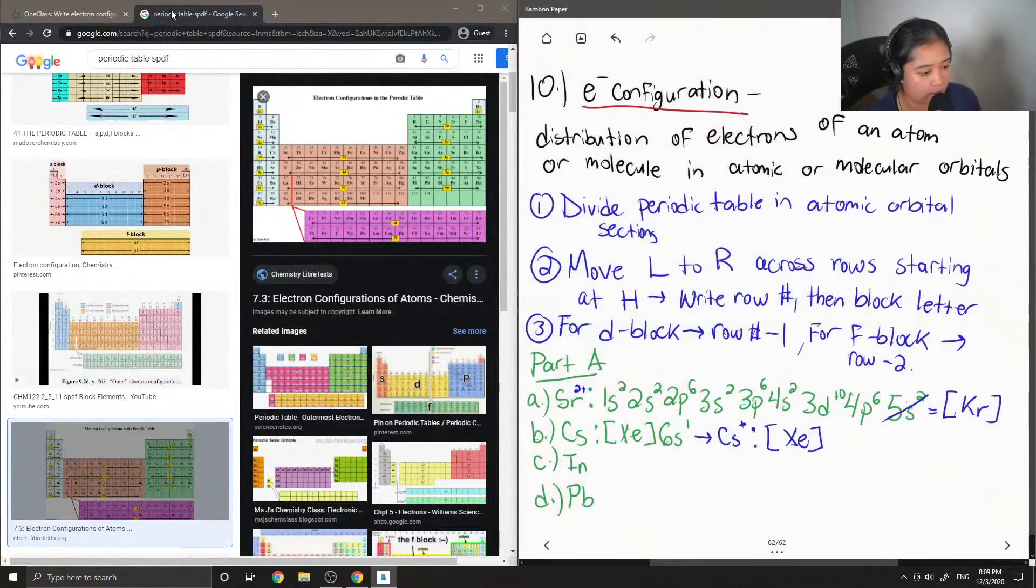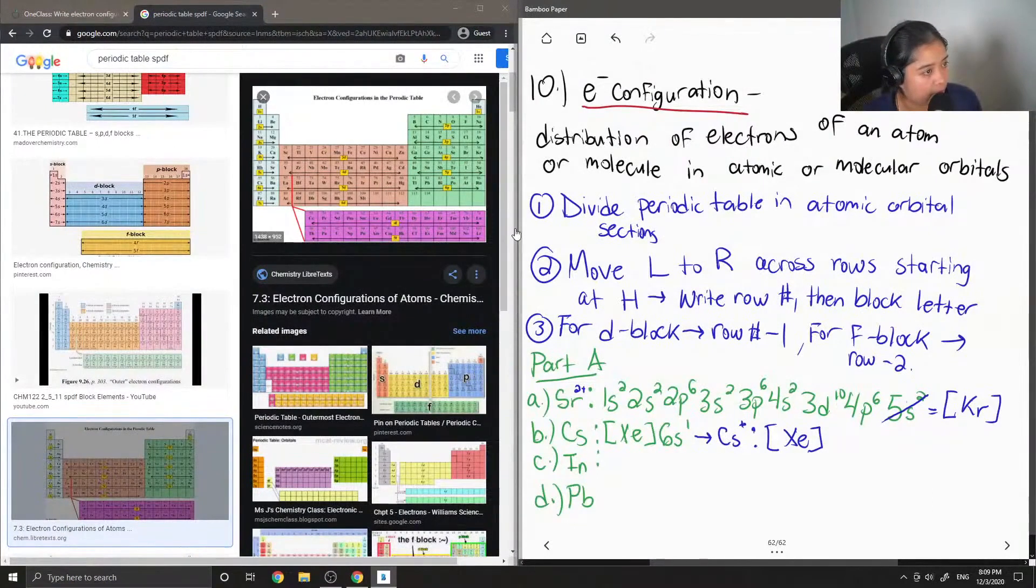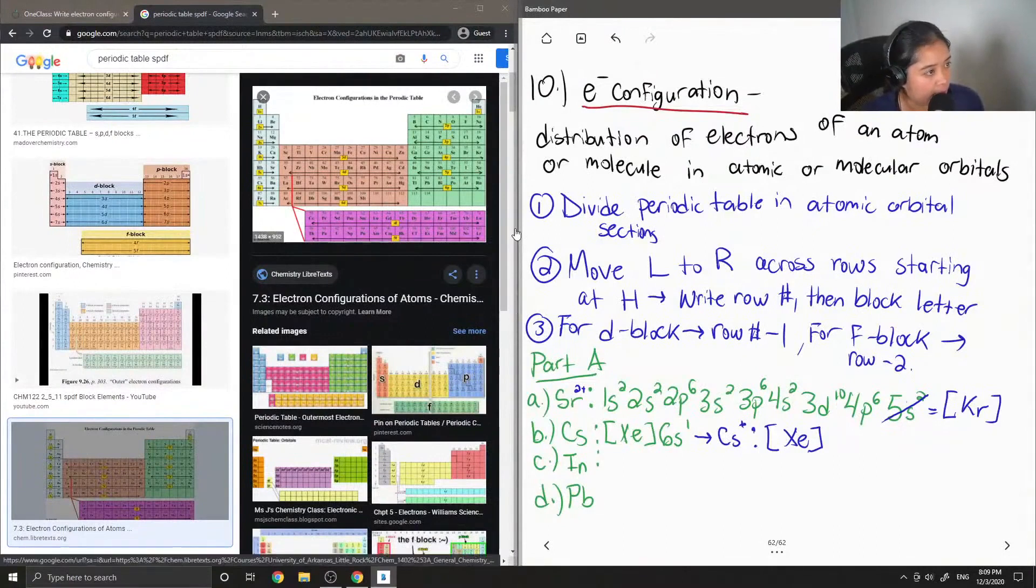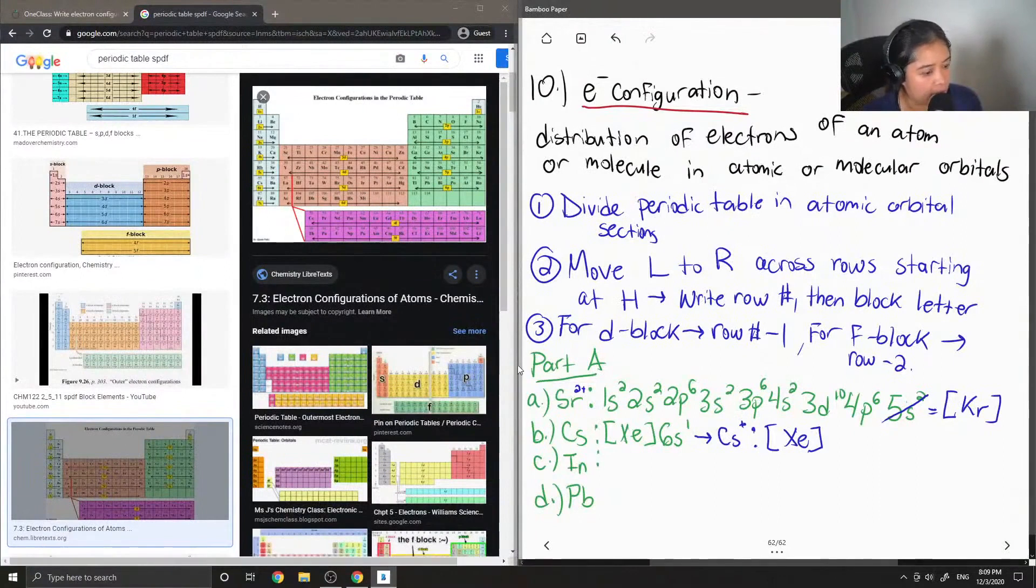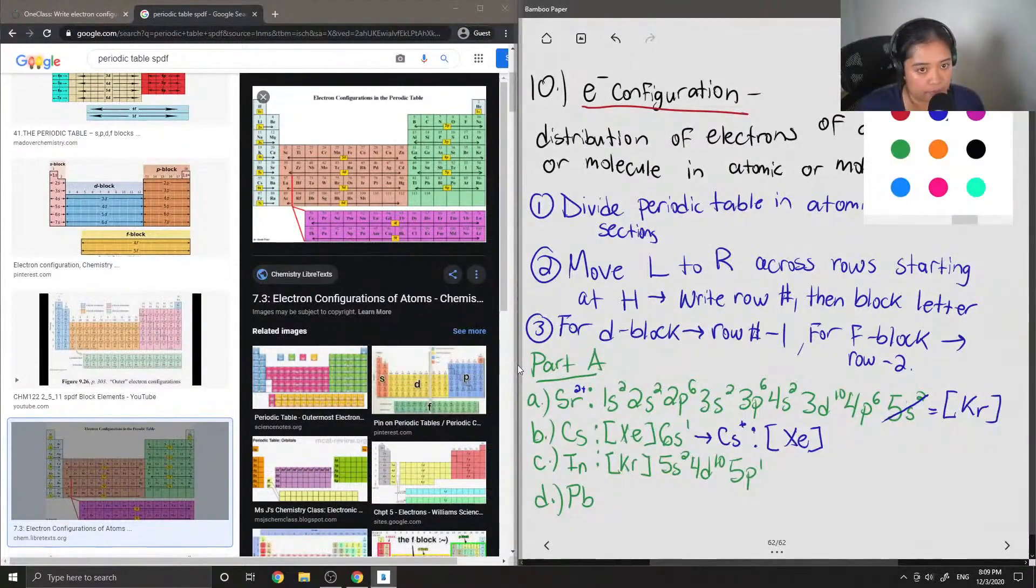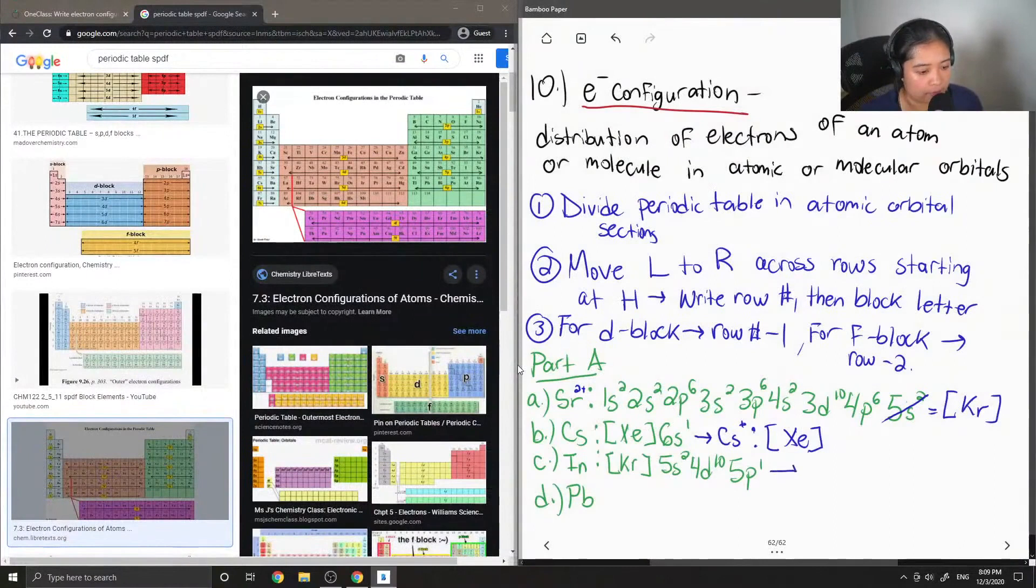Okay, so let's do the last two. Indium is found over here. So atomic number 49. So its shorthand electron configuration is krypton. 5s2, 4d10, 5s2, and then 5p1.